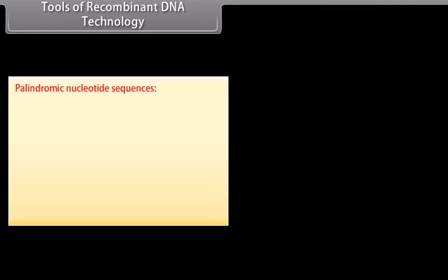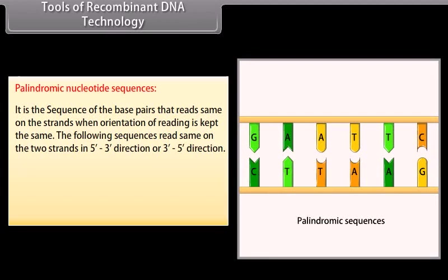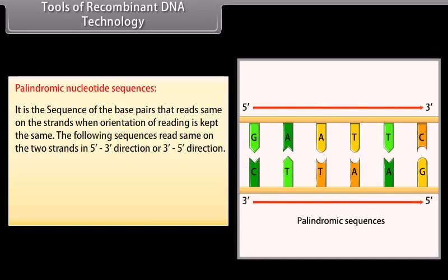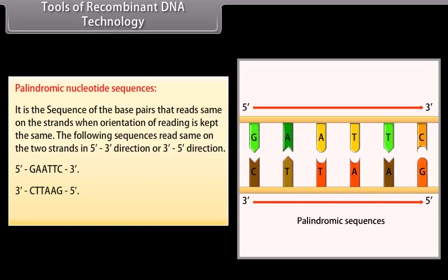Palindromic nucleotide sequences: It is the sequence of base pairs that reads the same on both strands when the orientation of reading is kept the same. The following sequences read the same on the two strands in the 5' to 3' direction or 3' to 5' direction. 5'–G-A-A-T-T-C–3' and 3'–C-T-T-A-A-G–5'.